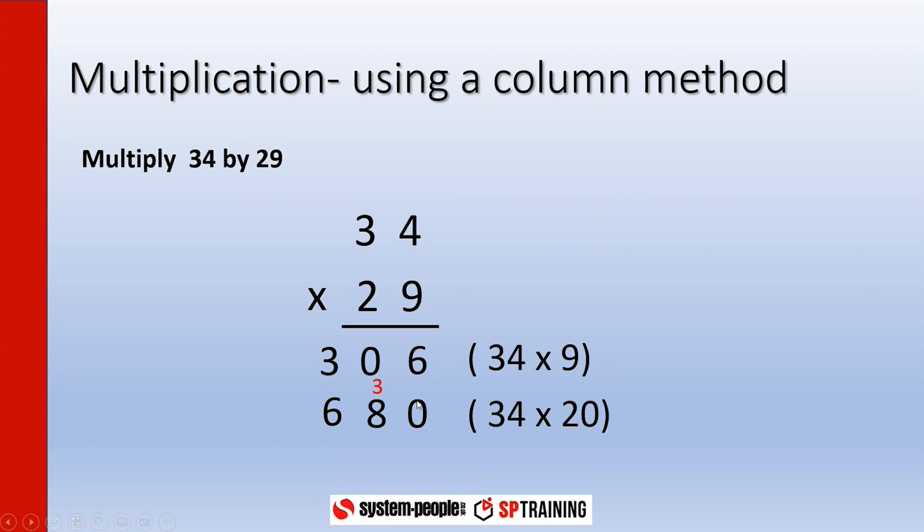Don't forget because it's a multiple of 10 you need the unit as 0 in that case, and then we just add up our columns. 6 and nothing is 6, nothing and 8 is 8, and 3 and 6 is 9. So the answer to our question there, 34 times by 29, is 986.